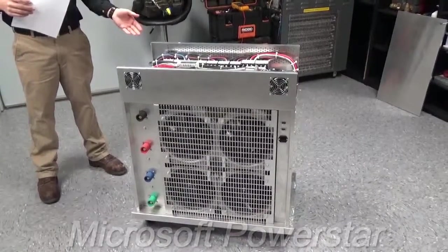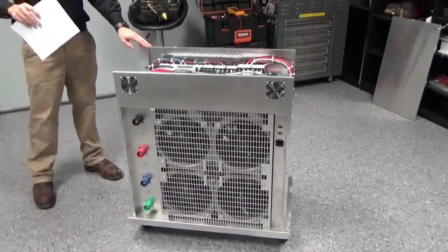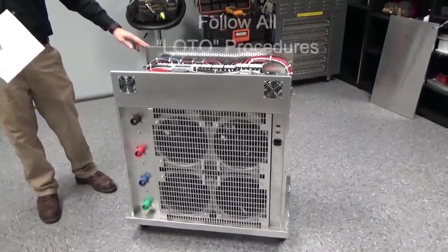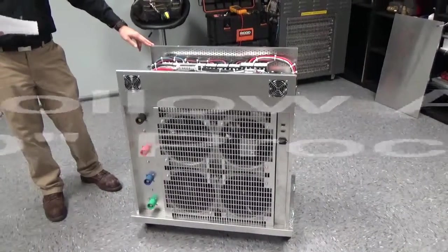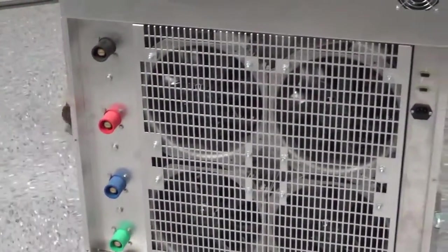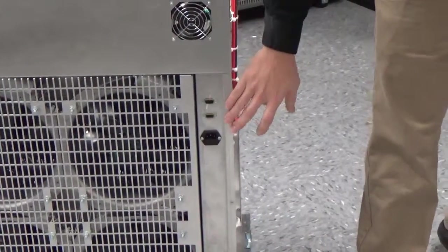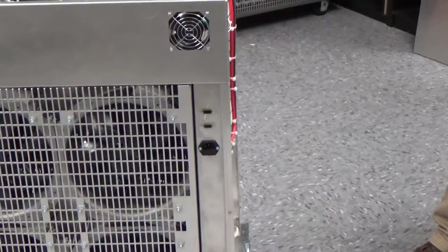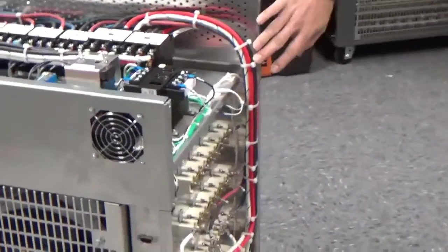When doing preventive maintenance on any of these load banks, you want to first remove power and follow any lockout or tagout procedures that your site may have. Right here, remove all your load connections. And on this side, you want to remove the 120 control power. From here, you'll be ready to remove all the covers and side panels.